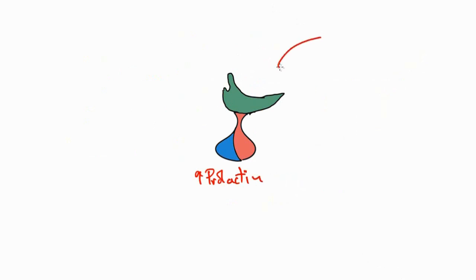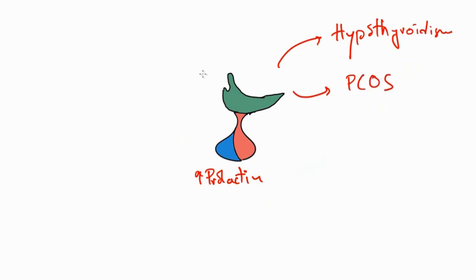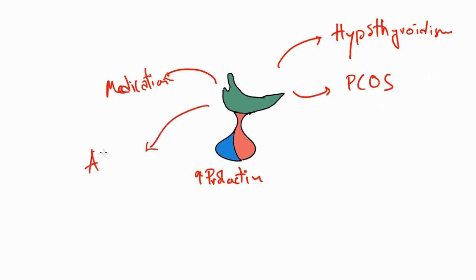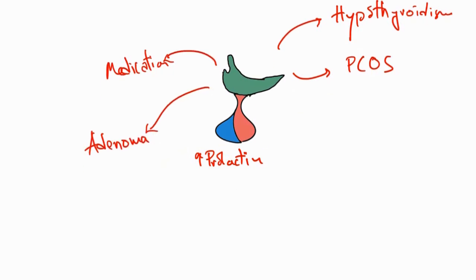Whenever a doctor sees increased prolactin levels, they may order other tests too. The sequence of evaluation will be: first, evaluating for hypothyroidism by ordering thyroid function tests; then an ultrasound for diagnosing polycystic ovarian syndrome; ruling out all the medications the patient is taking; and then, in the presence of symptoms, evaluating for the presence of an adenoma.